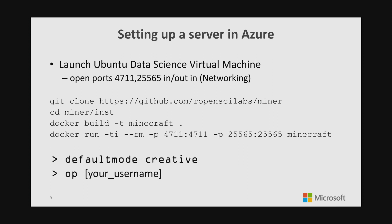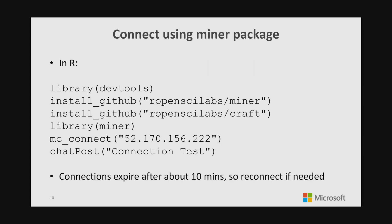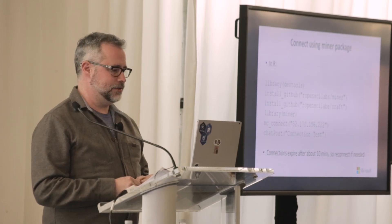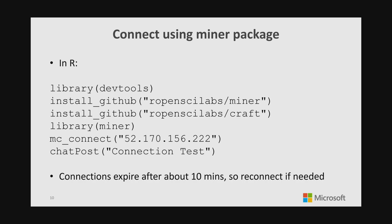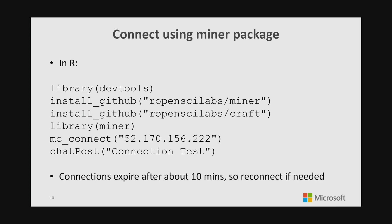The Data Science Virtual Machine is a handy collection of open source tools including R and Python already set up. It also includes Docker itself, which I use to run the Docker file that loads in all the Minecraft stuff, and also provides the TMux application, which is really handy for when SSH drops the connection and my Minecraft server dives. You might also want to run the command 'default mode creative' in Spigot after you get things up, because otherwise within a few minutes you'll be overrun with zombies. Once you've got everything set up, you can install those two packages from GitHub using Hadley's devtools package, then use the miner library. The mcconnect function connects R to the running Minecraft server.